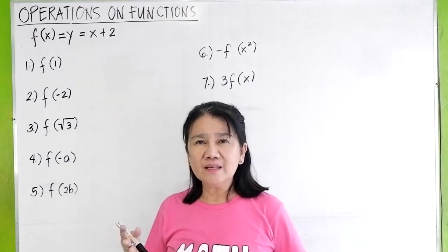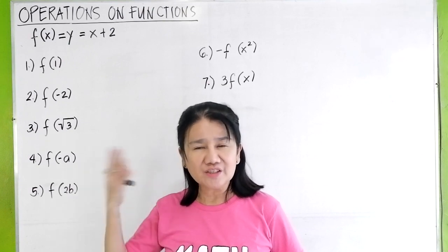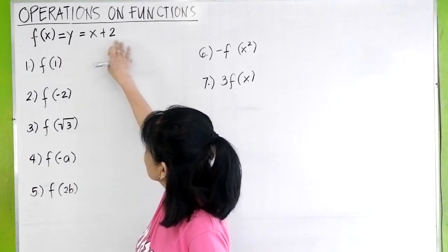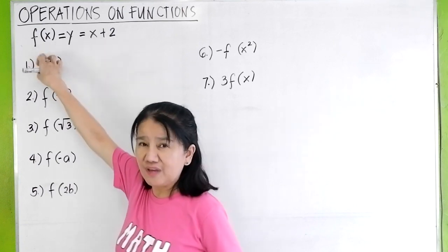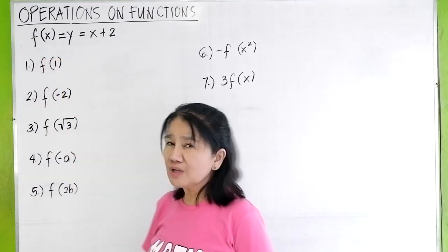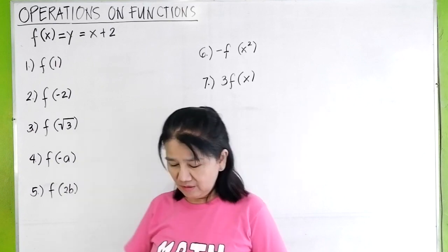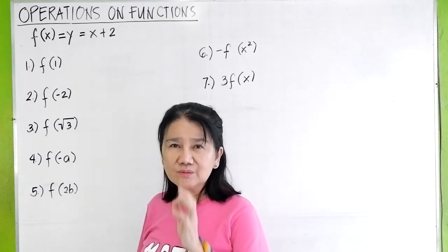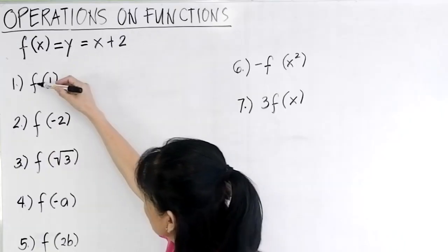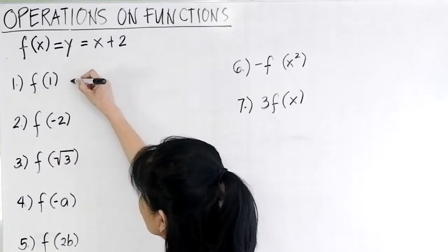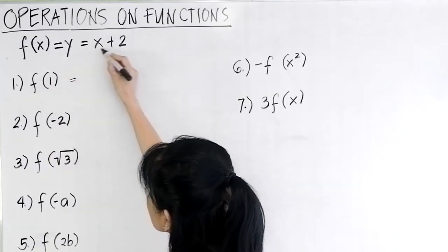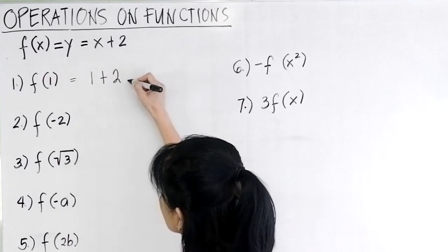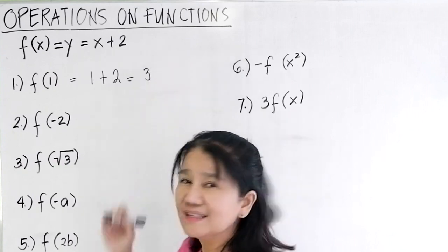f(x) is simply the y that you have learned in your previous algebra. So when we say y equals x plus 2, we're referring to f(x). If you're asked to find f(1), all you have to do is substitute 1 for x. So f(x) is x plus 2, which becomes 1 plus 2, so f(1) is simply 3.